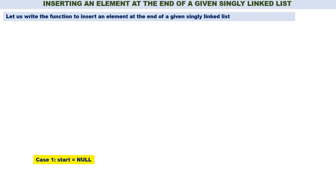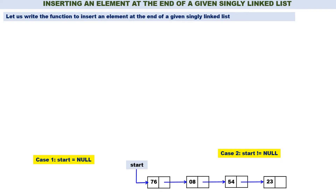There are two cases. Case 1: start is equal to null. Case 2: start is not equal to null. When start is not equal to null, you have a linked list — start will contain the address of the linked list. We have the linked list with four elements: 76, 08, 54, and 23. Start is containing the address of the first node, 76.